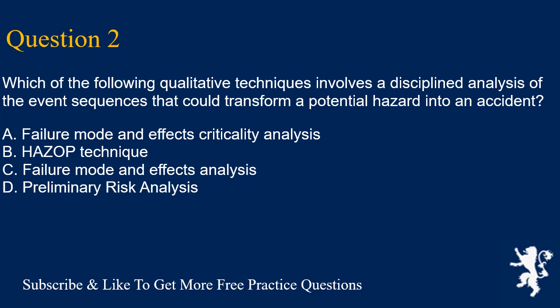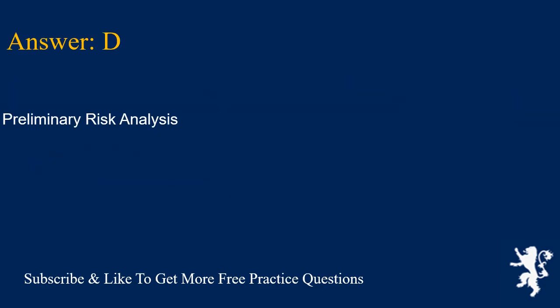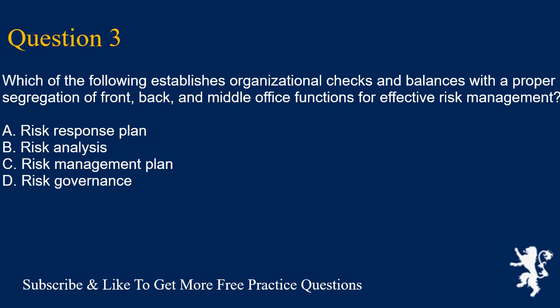Question 2: Which of the following qualitative techniques involves a disciplined analysis of the event sequences that could transform a potential hazard into an accident? A. Failure mode and effects criticality analysis. B. HAZOP technique. C. Failure mode and effects analysis. D. Preliminary risk analysis. Answer is D. Preliminary risk analysis.